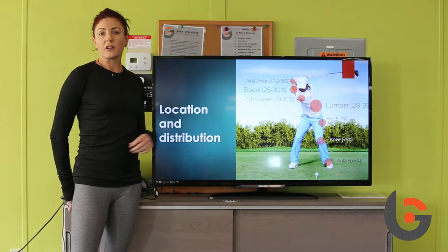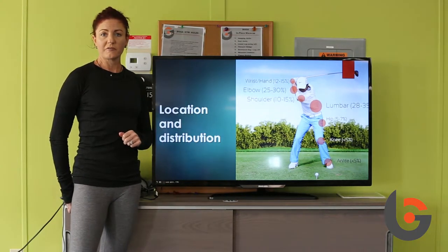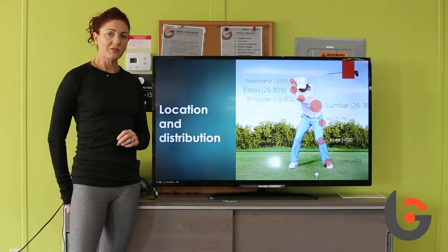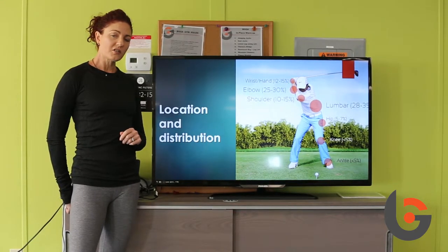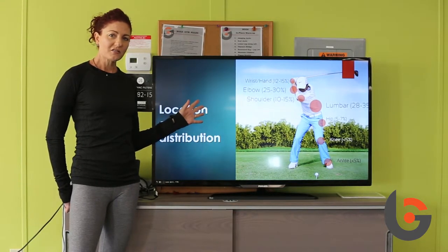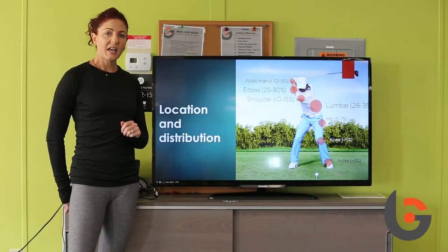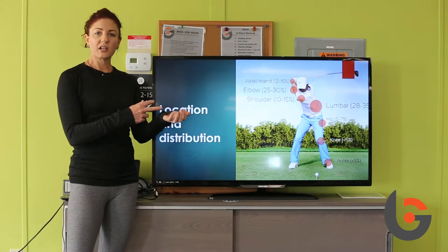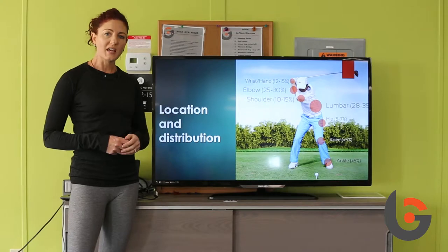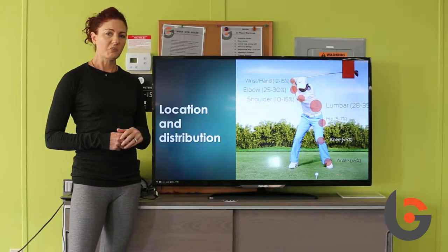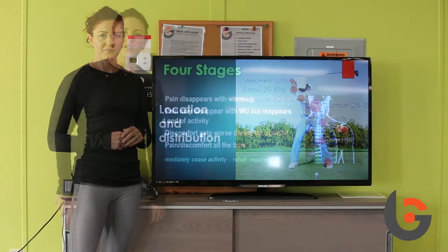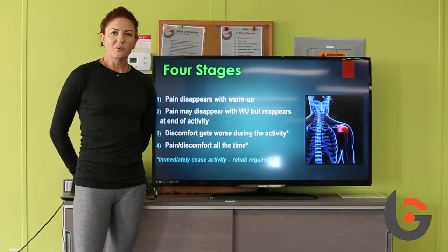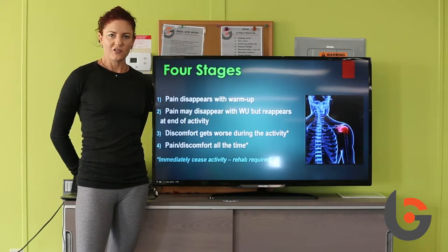This is a picture of the general distribution of overuse injuries in golf and their locations. The two key sites for our young golfers are going to be the lower back or lumbar spine, and as a complex, the wrist, forearm, and elbow. These are primarily the areas we're concerned with when dealing with overuse injuries in young golfers.